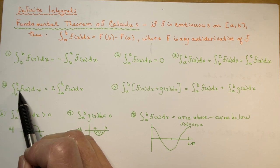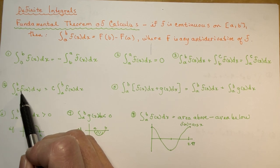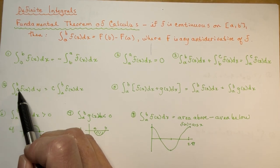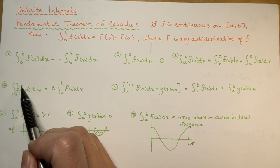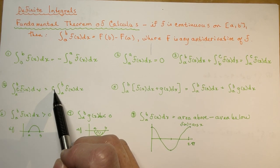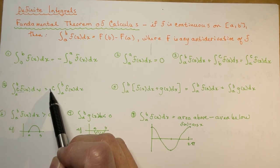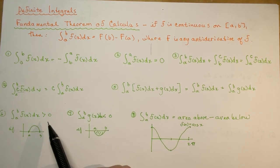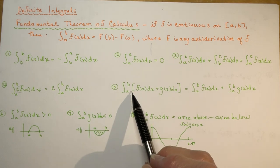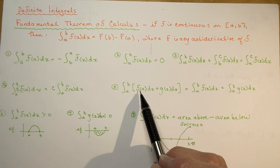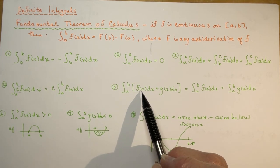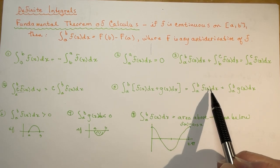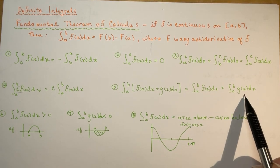Now, if you have a constant times a function and you're taking the definite integral, you can take the constant out front and evaluate the integral between a and b. And similarly, if I have something like f(x) dx plus g(x) dx, I can evaluate them separately and add them together.